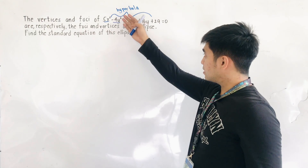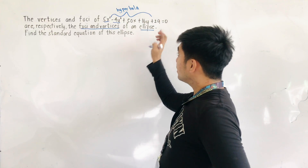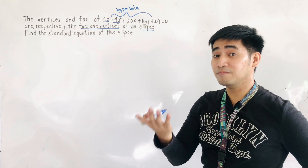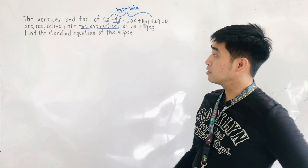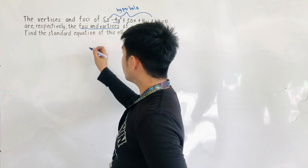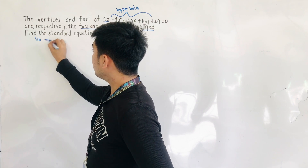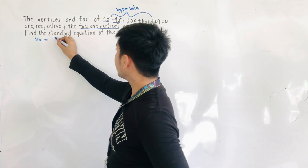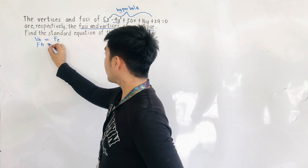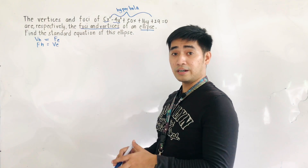The vertices and foci of this equation are respectively the foci and vertices of an ellipse. Therefore, based from the equation of the hyperbola, we will write an equation of an ellipse with the given condition. Find the standard equation of this ellipse. The condition is: the vertices of the hyperbola are equal to the foci of the ellipse, and the foci of the hyperbola are equal to the vertices of the ellipse.